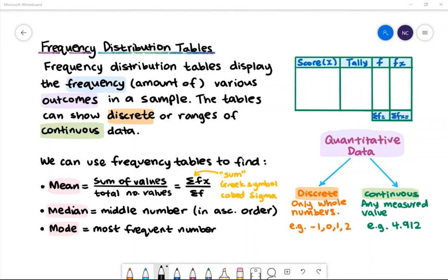We can use frequency tables to find the mean, which can be found by dividing the sum of values by the total number of values. This can be written as the sum of fx divided by the sum of f. The sign sigma is used to denote sum. We can also find the median, which is the middle number once we put all the scores in ascending order. Lastly, we can find the mode, which is the most frequent number.